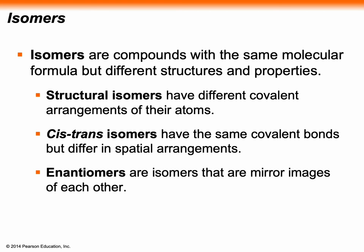Cis-trans isomers have the same covalent bonds — each atom is bound to the same atom as in the main molecule — but they may be in different places. Enantiomers are mirror images of each other. Molecules have sides; they have fronts and backs and tops and bottoms. Enantiomers are mirror images of each other.